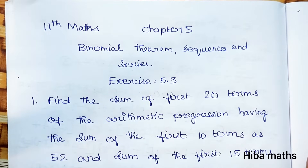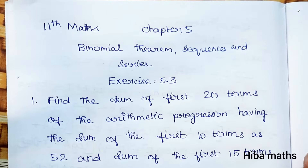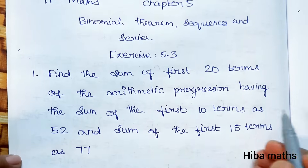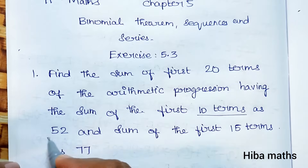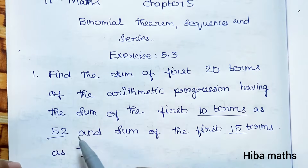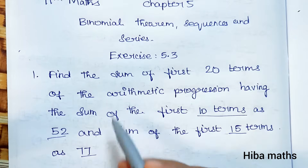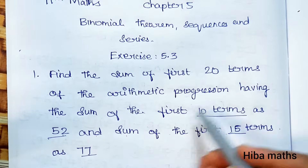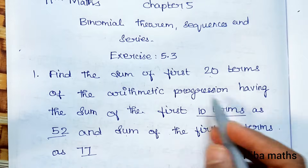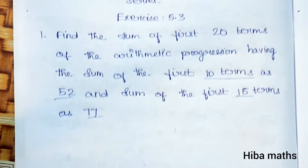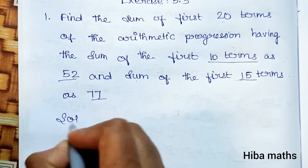Hello students, welcome to Class 11 Math, Chapter 5 Binomial Theorem, Sequences and Series, Exercise 5.3, first question. Find the sum of first 20 terms of the arithmetic progression having the sum of the first 10 terms as 52 and the sum of first 15 terms as 77. We understand the question: S(10) = 52, S(15) = 77, find S(20).